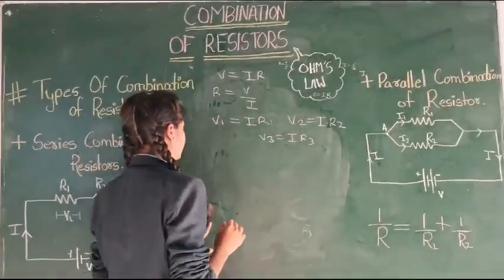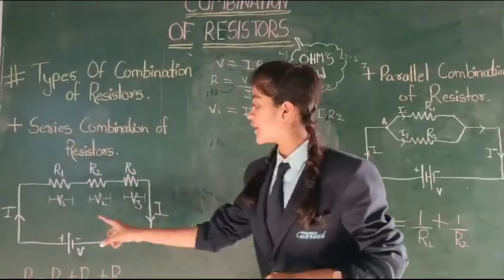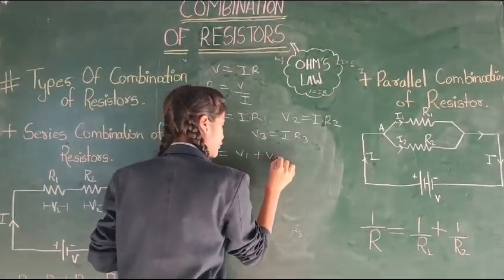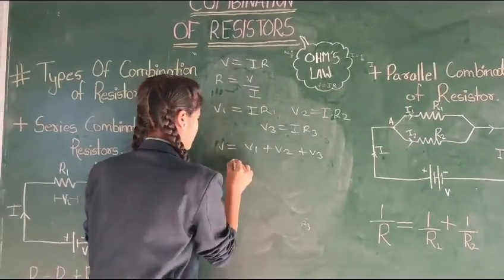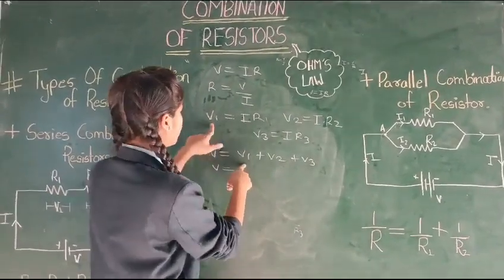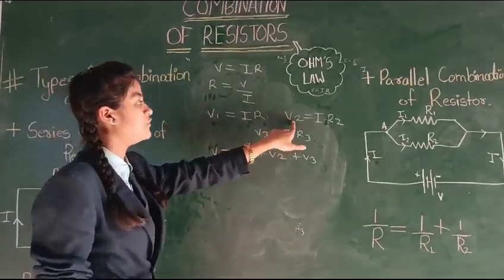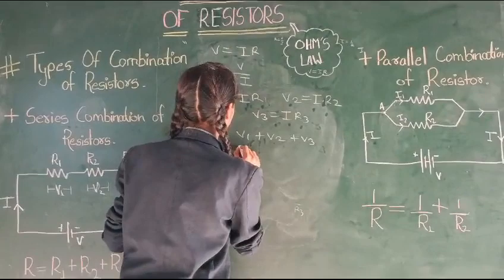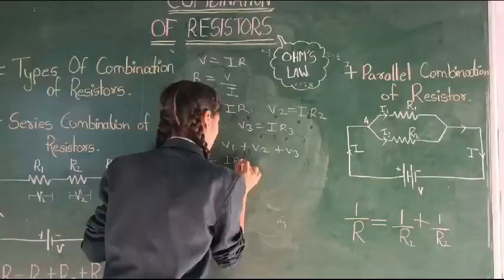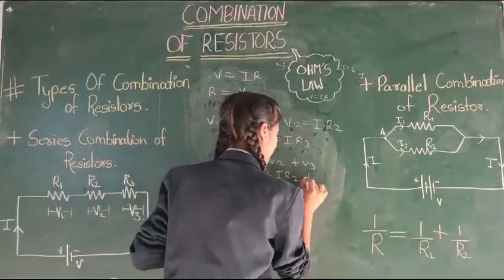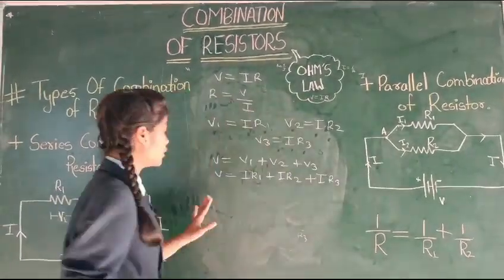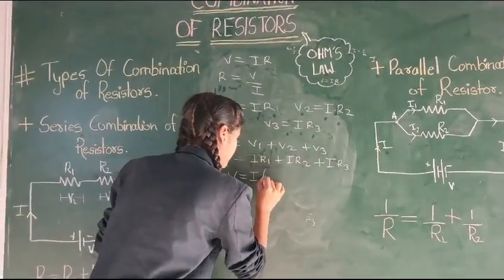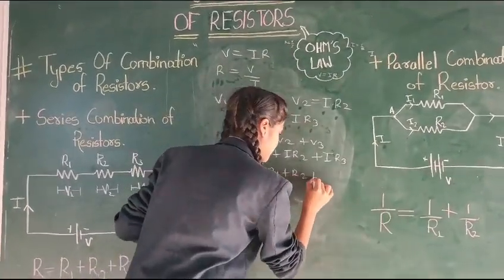Accordingly, we can write — as we know that for total voltage, we need to find V1 plus V2 plus V3. So we will write V equals to V1 plus V2 plus V3. V equals to — V1 value is I R1, V2 is I R2, and V3 is I R3. So we will substitute these values in this equation. From this term, we can take I as a common: V equals to I common.